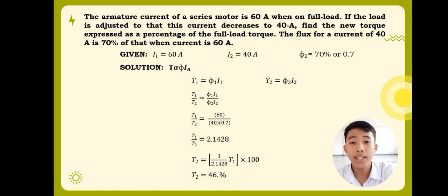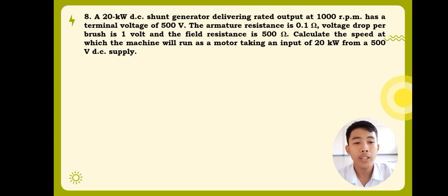Proceeding to the second problem. A 20-kilowatt DC shunt generator, delivering rated output at 1,000 revolutions per minute, has a terminal voltage of 500 volts. The armature resistance is 0.1 ohms, voltage drop per brush is 1 volt, and the field resistance is 500 ohms. Calculate the speed at which the machine will run as a motor, taking an input of 20 kilowatts from a 500 volts DC supply.